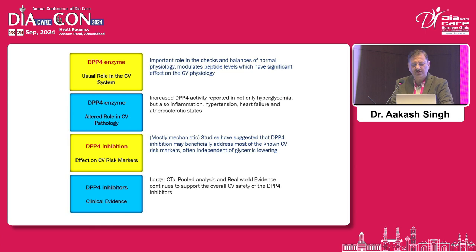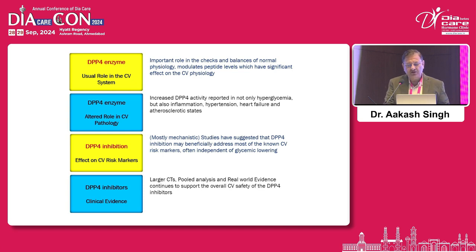The DPP-4 enzyme has an important role in the cardiovascular system — it plays a key role in the checks and balances of normal physiology and modulates peptide levels, which have significant effects on CV physiology. Increased DPP-4 activity is reported not only in hyperglycemia, but also in inflammation, hypertension, heart failure, and atherosclerotic states. Most mechanistic studies have suggested that DPP-4 inhibition may beneficially address most of the known CV risk markers, often independent of glycemic lowering. Larger controlled trials, pooled analyses, and real-world evidence continue to support the overall CV safety of DPP-4 inhibitors.